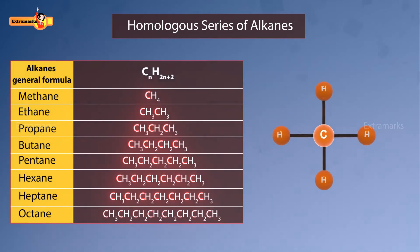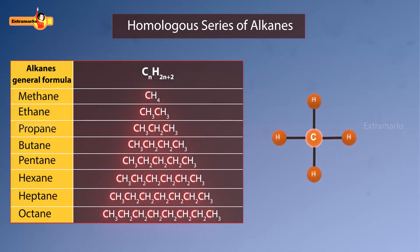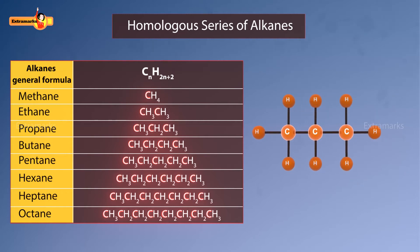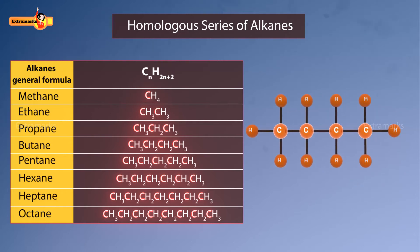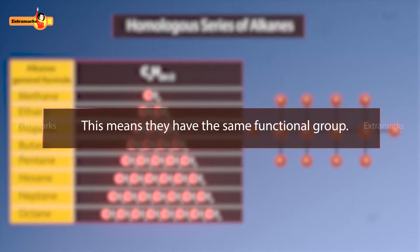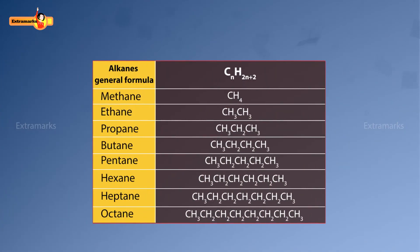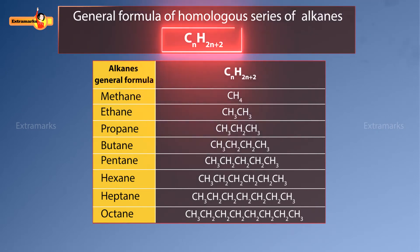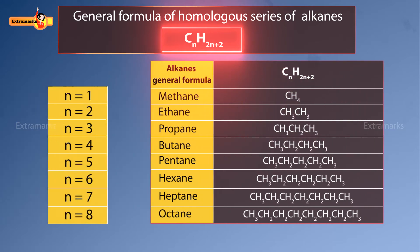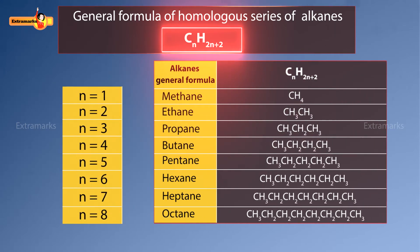Notice that these compounds have different numbers of carbon atoms, but all carbon atoms are bonded to each other by single covalent bonds. This means they have the same functional group. All members of the homologous series of alkanes can be represented by the general formula CₙH₂ₙ₊₂, where n is the number of carbon atoms and can have values 1, 2, 3, and so on.